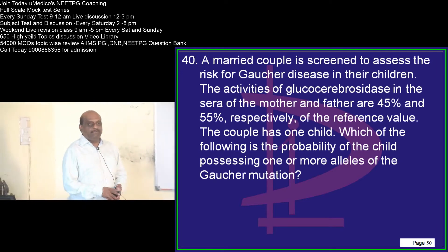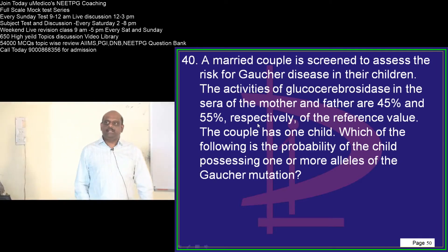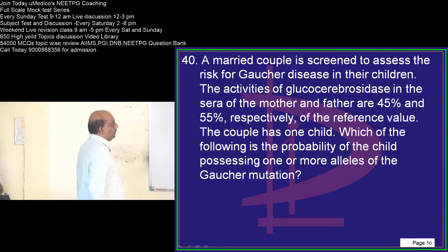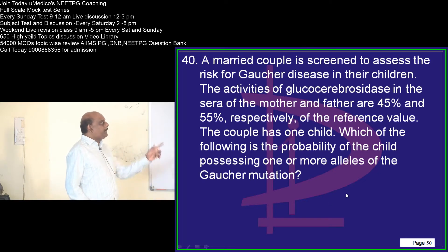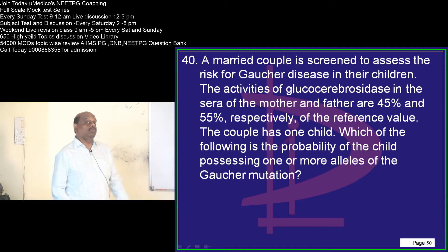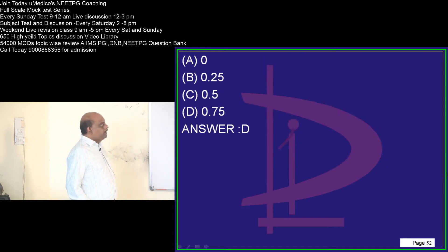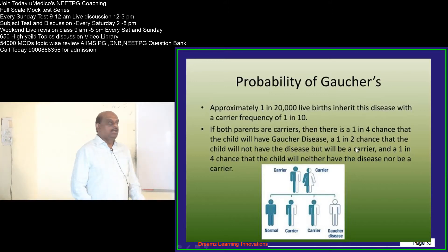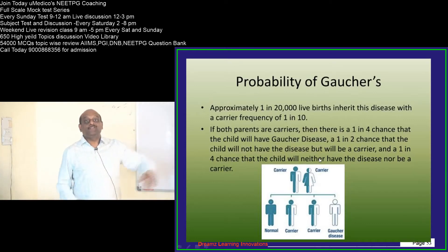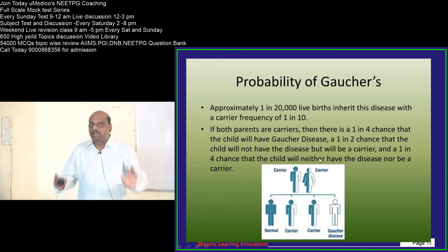A married couple is screened for Gaucher's disease. Gaucher's is an example of an autosomal recessive disorder. The 45% and 55% values show that both of them are carriers. The couple had a child — what is the probability that this child can have one or more of those disease alleles? Remember that if both parents are carriers, only 25% chance exists that the child is free from the abnormal alleles.